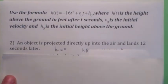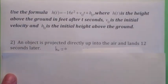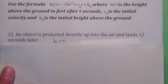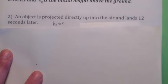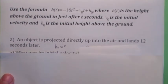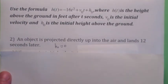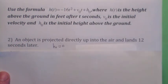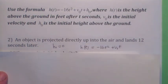Same formula. This next one, it says an object is projected directly up in the air and lands 12 seconds later. It almost seems like they don't tell you enough information, I think. But what is the initial height? It doesn't mention anything about the initial height. So let's just assume it's zero. Let's assume that it's being projected straight up from ground level because there's no reason to think otherwise.